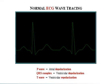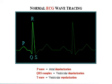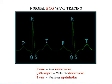In this animation, we see heart electrical activity reflected in an ECG wave tracing. The P wave represents atrial depolarization. The QRS complex represents ventricular depolarization. And the T wave represents ventricular repolarization. Please note that in a normal ECG wave tracing, atrial repolarization is hidden by the QRS complex.